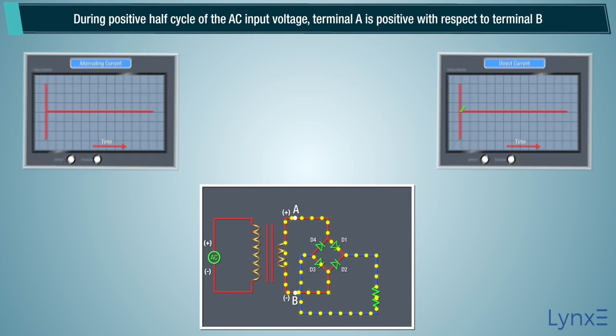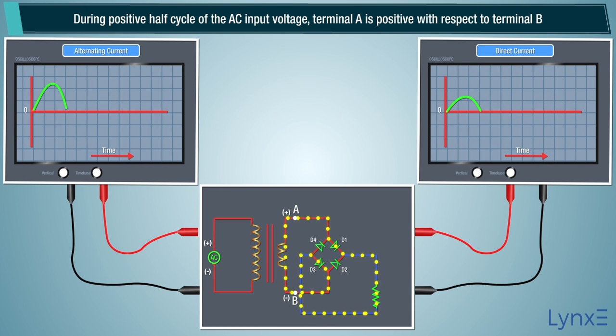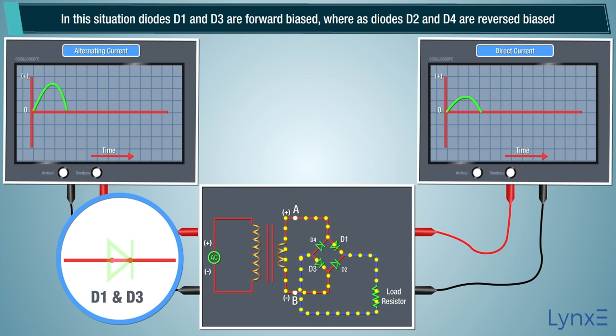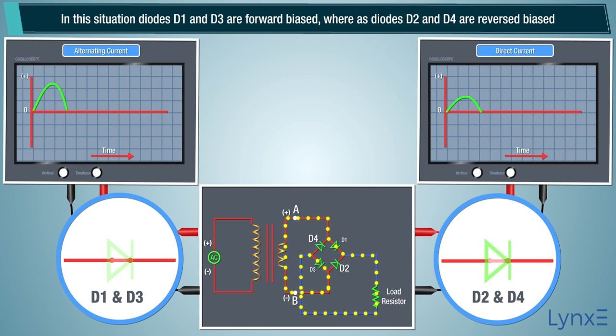During positive half cycle of the AC input voltage, terminal A is positive with respect to terminal B. In this situation, diodes D1 and D3 are forward biased, whereas diodes D2 and D4 are reverse biased.